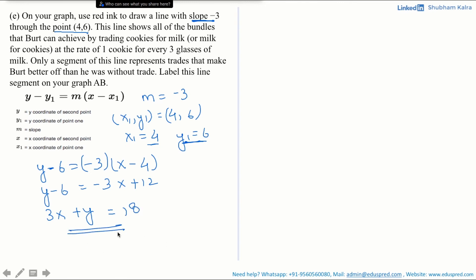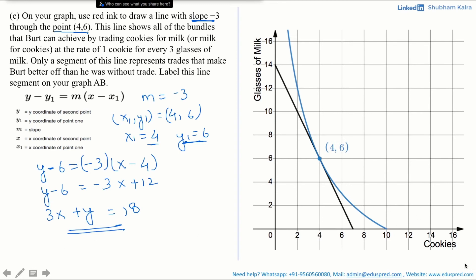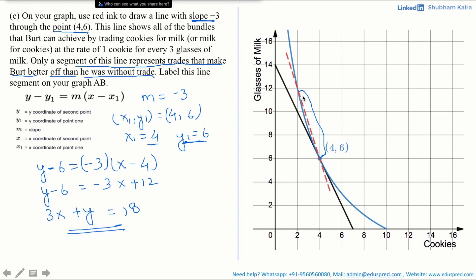Let's plot it on the graph. We have already drawn the graph with number of cookies on the x-axis and glasses of milk on the y-axis. The blue line represents the indifference curve through (4, 6), and the black line is the tangent to the curve at (4, 6) with slope minus 2. Now we draw the red line 3x + y = 18. Notice that a certain segment of this line lies above the indifference curve — this segment represents the trades that make Bert better off than without the trade, as those bundles give a higher utility than on the indifference curve. Labeling this segment gives us the segment from point A to point B, which makes Bert better off by giving him a higher utility level.